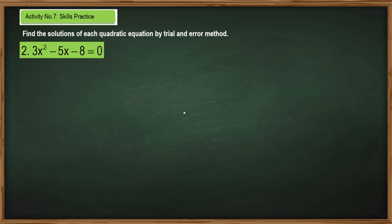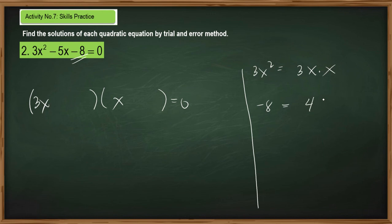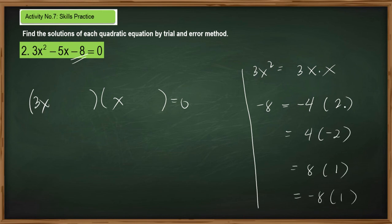For item number 2, the coefficient of x squared is positive, so we can prepare our two parentheses and working area. What are the factors of 3x squared? These are 3x times x. Then, what are the factors of negative 8? We have 4 times 2, or negative 4 times 2, or 4 times negative 2, or 8 times 1, or negative 8 times 1. If the earlier factors don't work, we try the next ones. Let's try negative 4 and 2.